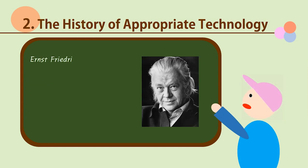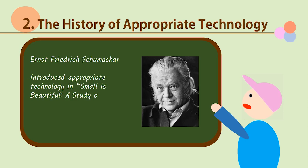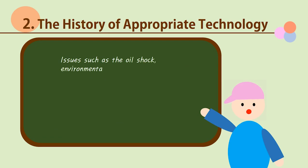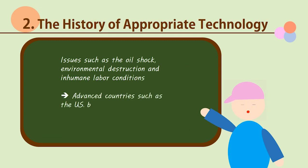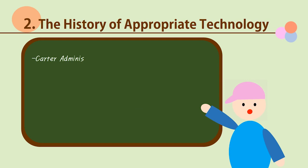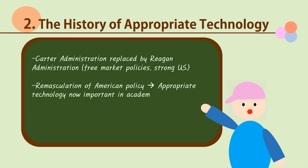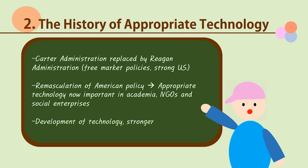Later, in 1973, British economist Ernst Frederick Schumacher first introduced the concept of Appropriate Technology in 'Small is Beautiful: A Study of Economics as if People Mattered.' He used the term intermediate technology to refer to the fact that this technology lies between advanced and indigenous technology. Although the idea of Appropriate Technology was made with third-world countries in mind, issues such as the oil shock, environmental destruction, and inhumane labor conditions led even advanced countries such as the United States to endorse Appropriate Technology on a national scale. However, the Carter administration, which actively advanced Appropriate Technology, was soon replaced with the Reagan administration, which advocated free market policies and a strong image of the United States.